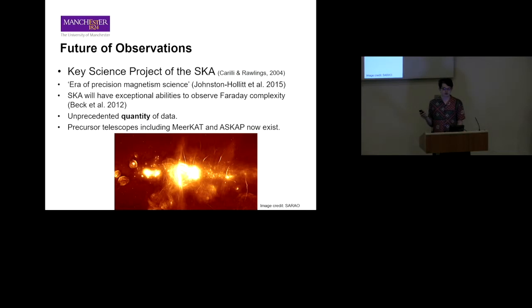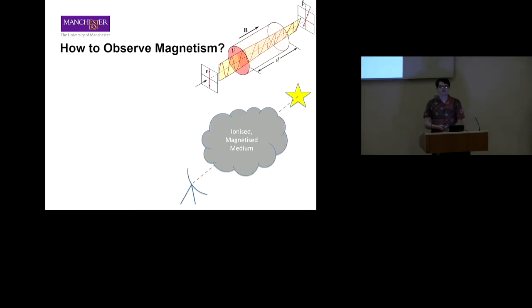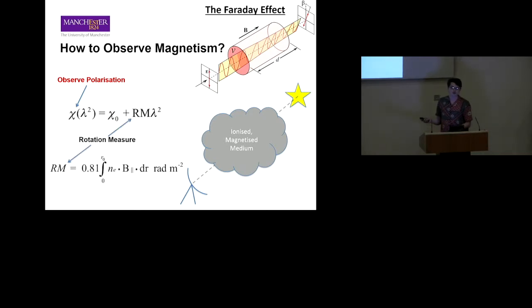How do we actually observe magnetism? Magnetic fields are invisible, but we can observe their effect on radiation passing through them through the Faraday effect. If you have a source of synchrotron emission and between that and the observer you have an ionized and magnetized medium, the Faraday effect causes a rotation in the plane of polarization which is detectable here on Earth. If we observe the angular polarization chi in this equation against many different values of wavelength lambda squared, we're able to obtain what's known as a rotation measure value, which quantifies the extent of the Faraday effect. This is what we want to find because it's related to the magnetic field strength and direction along the line of sight.